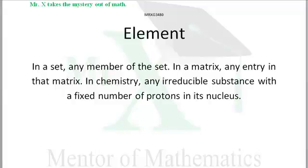In a matrix, any entry in the matrix is considered an element. And of course in chemistry, an element is an irreducible substance — you can't break it down into anything more elemental than the element.